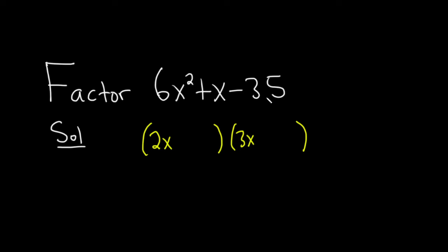We need two numbers that multiply to negative 35. Let's do 5 and 7. One of them has to be negative—I don't know which one. I'm going to try this one and put a plus here. Let's see if this works.